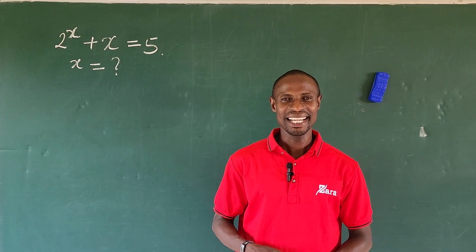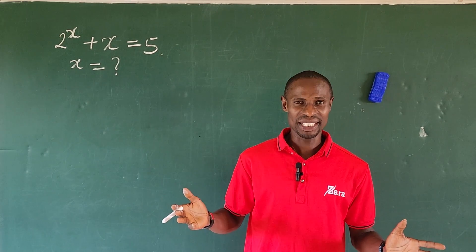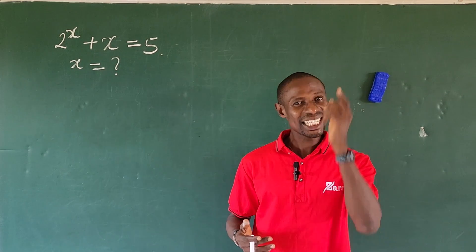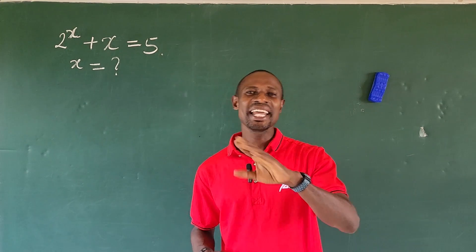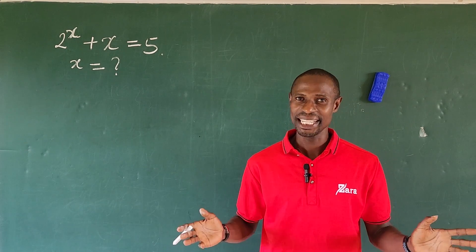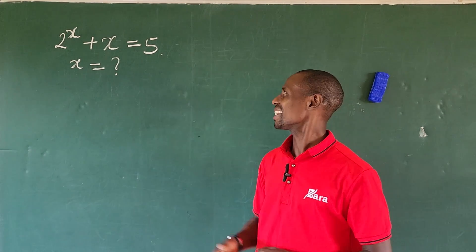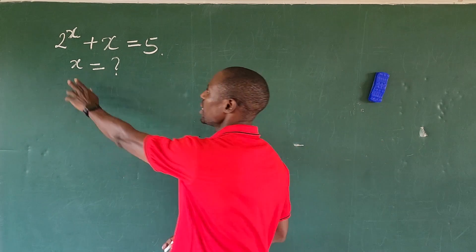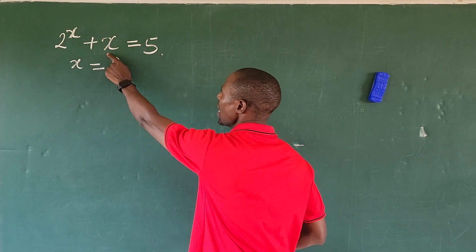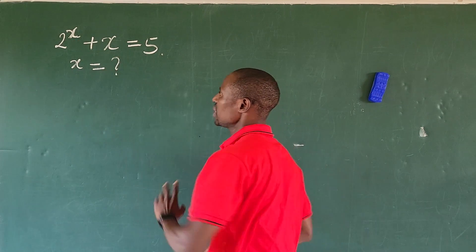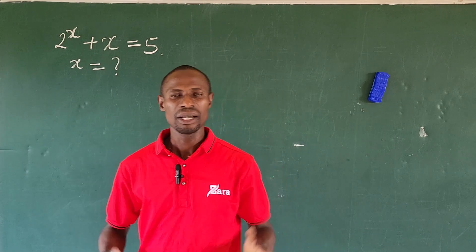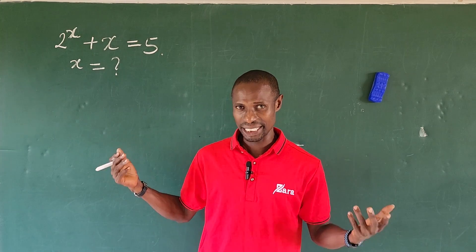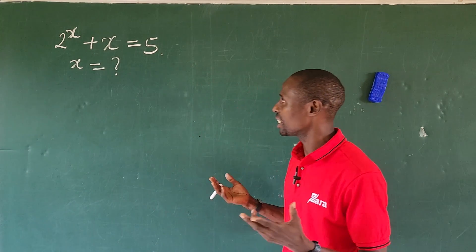Welcome to OnlineMassTV. As I promised in my previous video, this Sunday morning I'm going to release a powerful exponential equation, and here it is on the board. The question reads: 2 to the power of x plus x equals 5. What would be the possible value of x? If you look at this exponential challenge, it's a very nice one.